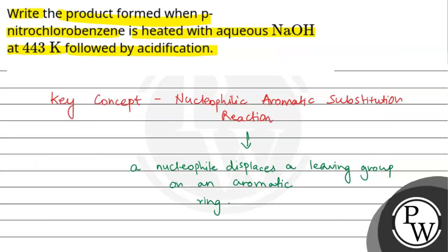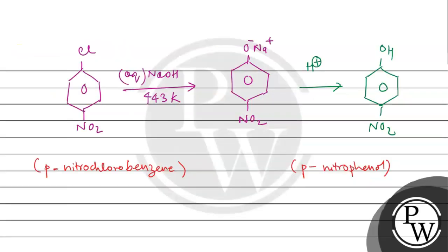So the final answer for this question is that the product formed from the reaction of para-nitrochlorobenzene heated with aqueous NaOH at 443 Kelvin, followed by acidification, is para-nitrophenol.